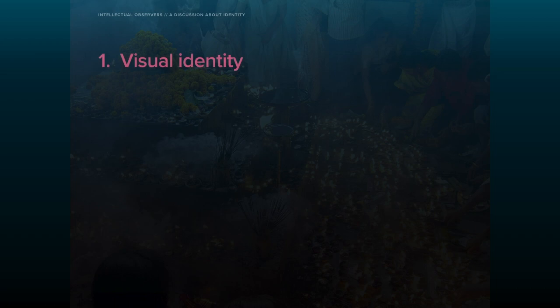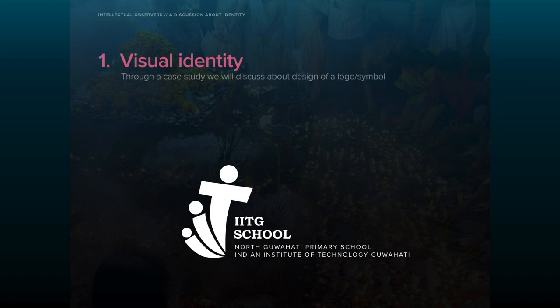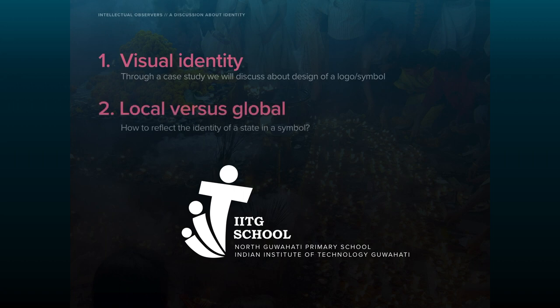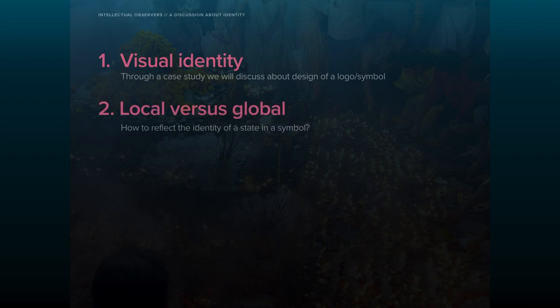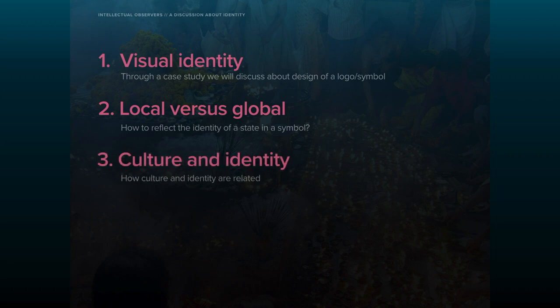The presentation is broadly divided into four sections. It begins with the story of designing a logo and symbol for a primary school, but the feedback I receive about the logo leaves me confused. It makes me wonder why my logo form does not reflect the identity of the state. To answer this question, I begin a search for visual clues to find a link between culture and identity.